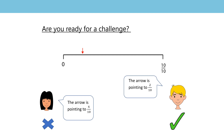Did you get that Chen is actually correct? But the important part is could you explain why? Your explanation might be slightly different to mine. Sara can't be correct because six tenths is a larger number on the number line than two tenths. Six tenths would be further away from zero and closer to ten tenths or one whole. Chen's answer of two tenths is a number that is closer to zero than six tenths, and I can visualise that the arrow is pointing to two tenths. Therefore Chen is correct.